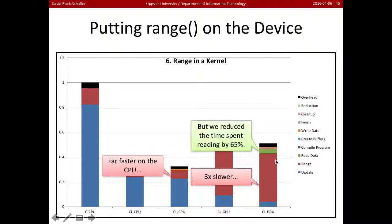So we went ahead and put range on our device and it ran faster on the CPU, which was great because it was running in parallel. But on the GPU it ran much slower, so we actually slowed down our range reduction by moving it to the GPU. Let's take a look at what's going on here.